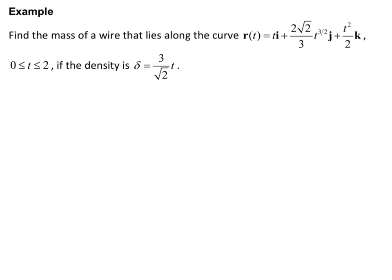Example: find the mass of a wire that lies along the curve R(t) = t·i + (2√2/3)t^(3/2)·j + (t²/2)·k for t going from 0 to 2, if the density is delta equals 3 over square root of 2 times t. The t bounds are given as 0 to 2 and the density function is given in terms of t, so we won't have to substitute x, y, and z — the function is already in terms of t.